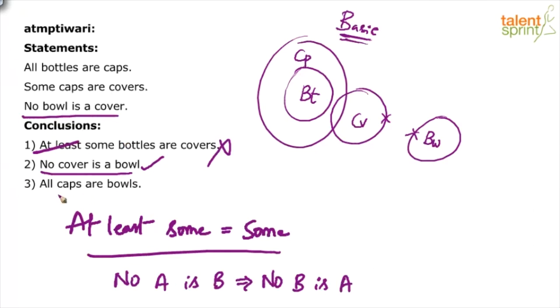Look at conclusion three: all caps are bowls. Do you see this? No. Not possible. From the basic diagram itself, you find that caps and bowls do not even touch. There's no overlapping between caps and bowls. So this particular conclusion fails in the basic diagram itself.